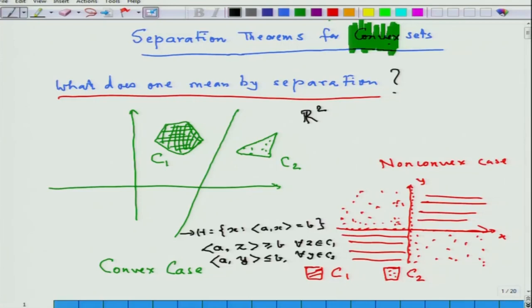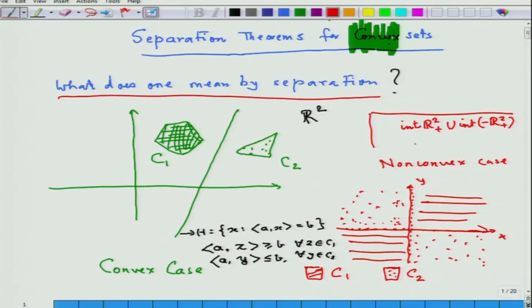Now look at the non-convex case. What I have done is taken the interior of the first quadrant and the interior of the third quadrant — writing more technically, I have taken the interior of R²₊ union the interior of minus R²₊. Now look at the union of the second quadrant with the fourth quadrant. These two sets have empty intersection, but can you draw a line such that one set is on one side and the other set is on the other side?